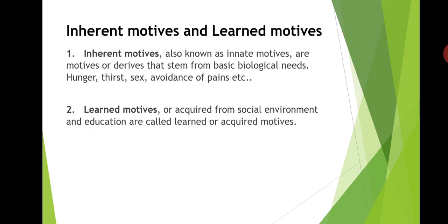Next type: inherent motive and learned motive. Buying motives are also divided into inherent motive and learned motive. Inherent motives, also known as innate motives, are those which stem from basic needs — for example, hunger, thirst, sex, or avoidance of pain. Learned motives are acquired from social environment and education — for example, desire for social recognition or prestige is an example of a learned motive. It may be noted that learned motives are always stronger and more useful buying motives than inherent motives.